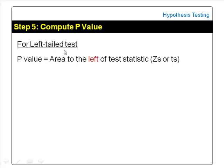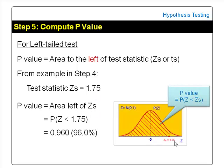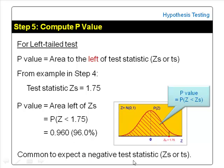For a left-tailed test, the p-value is the area to the left — not the right — of the test statistic, zs or ts. Using the same example from step 4, the test statistic zs is 1.75. The p-value for this left-tailed test will be the area to the left of 1.75, written as the probability of z less than 1.75. This area is 0.96 or 96%. It is common to expect a negative test statistic when we do a left-tailed test.